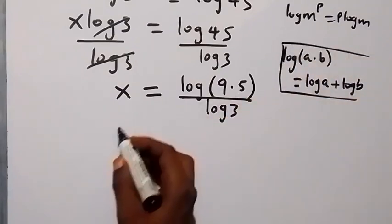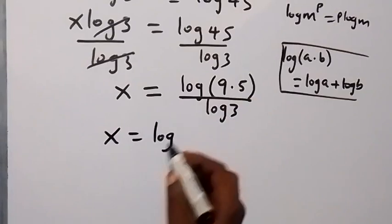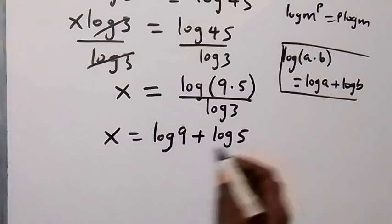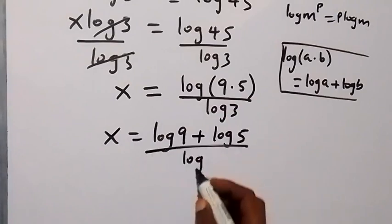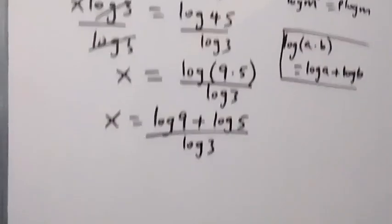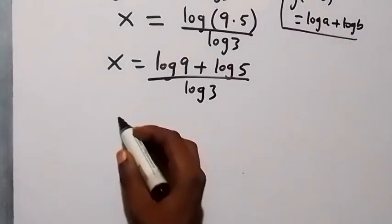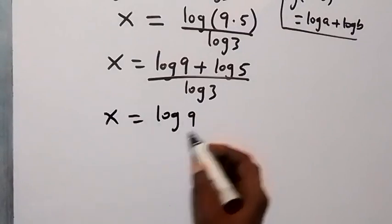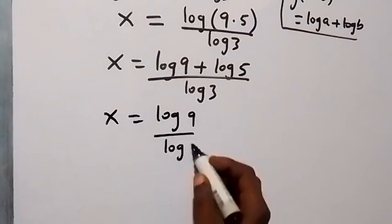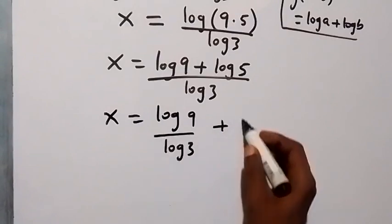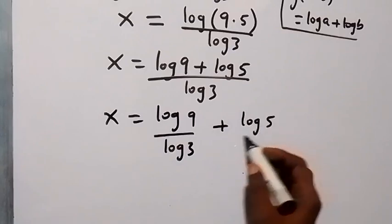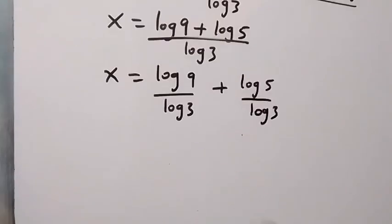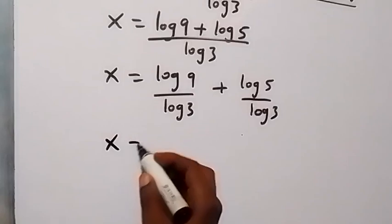Applying the log product rule, log(9 × 5) becomes log 9 plus log 5. So we have x equals log 9 over log 3 plus log 5 over log 3. We can simplify this further.